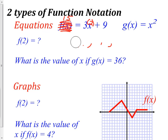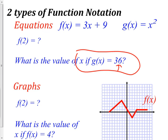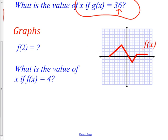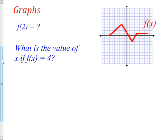Remember, they can either give you x or give you y. Look at this graph — same deal. If I say f(2), x is 2. Look at the picture, find where x is 2, follow it down to find the point. That's (2, −2), so the answer is −2. They already told me the x, so they want the y.